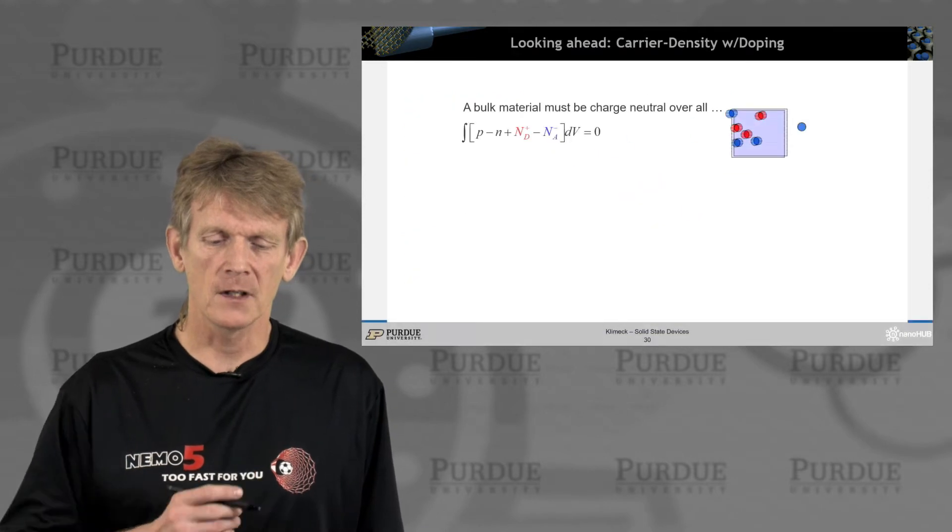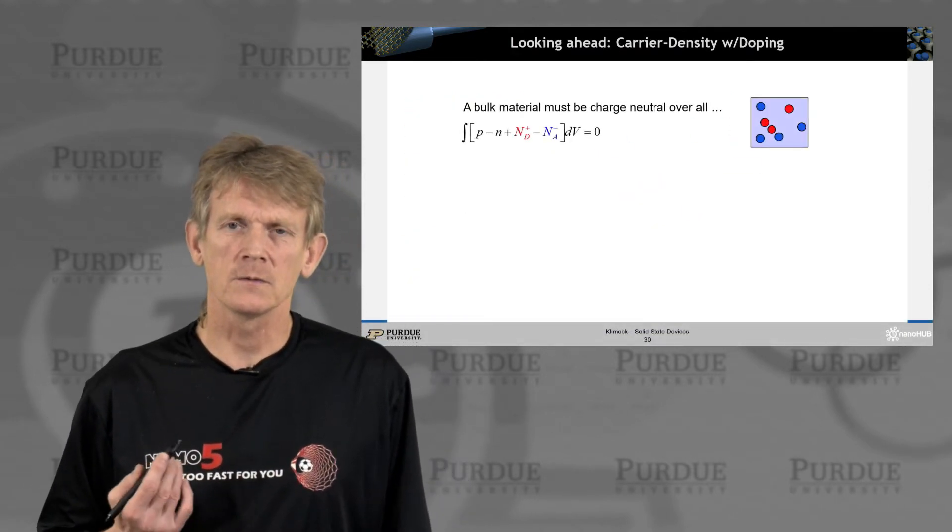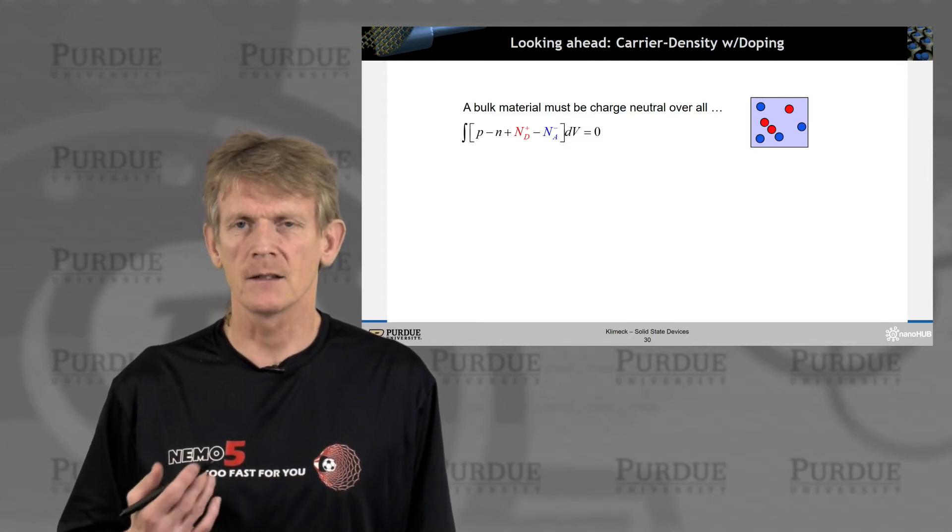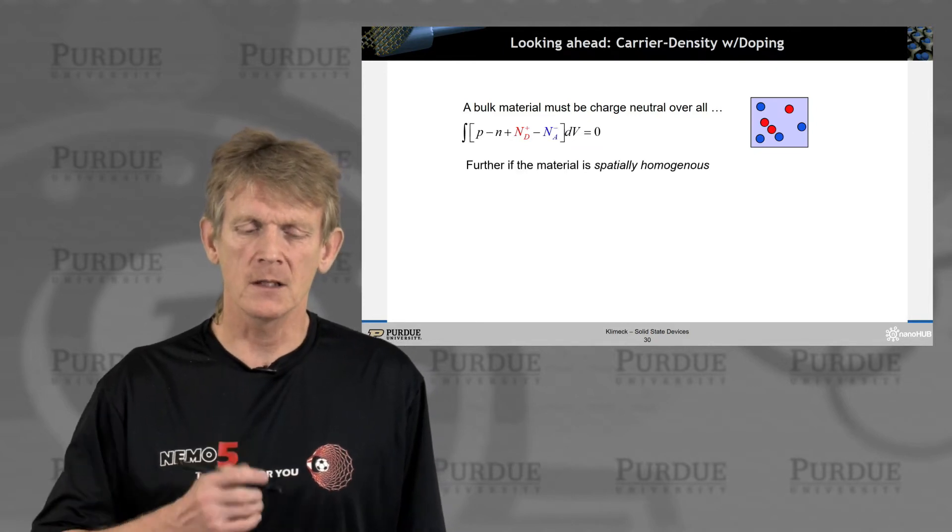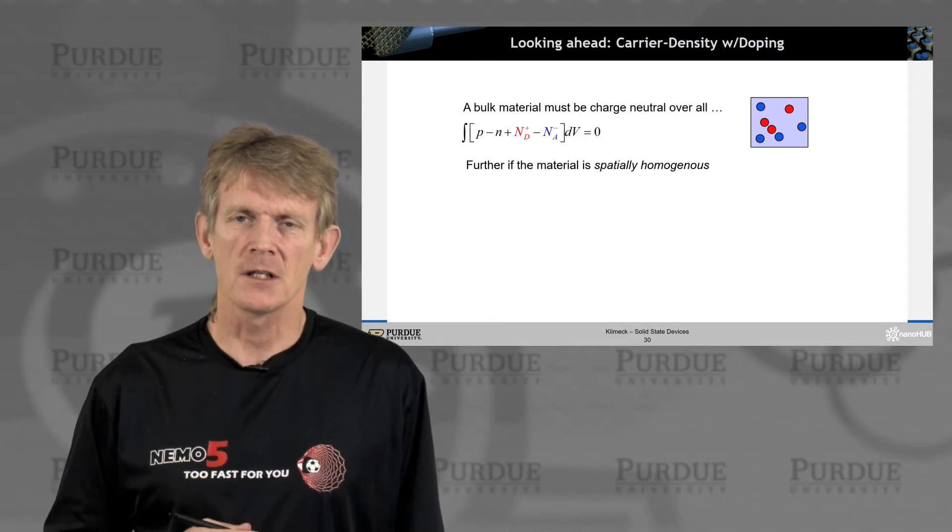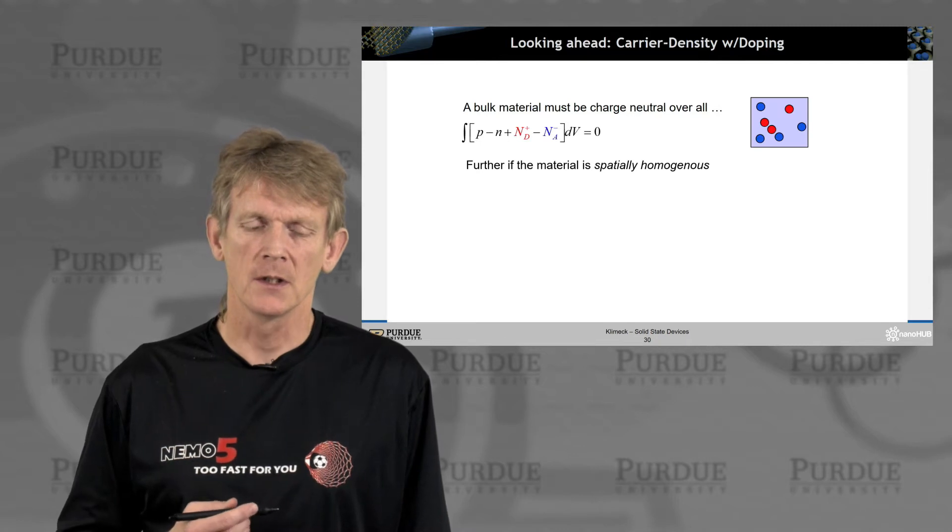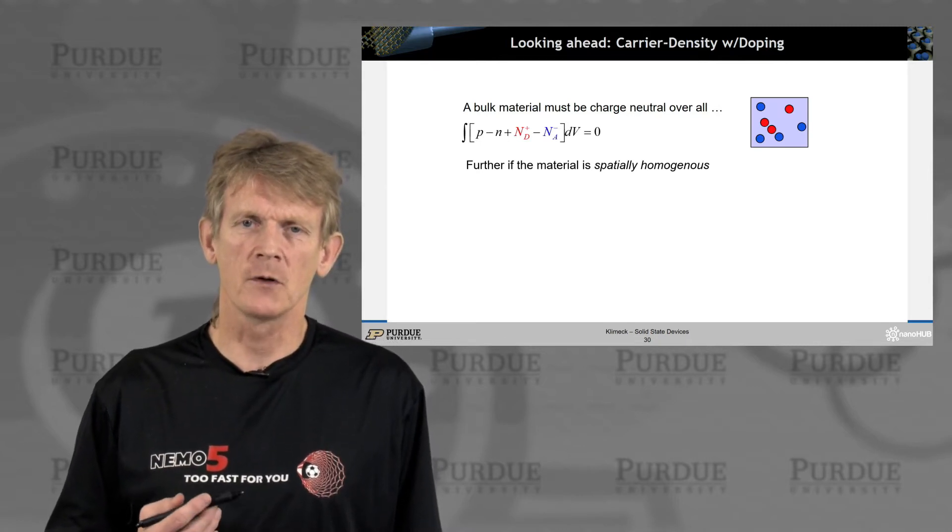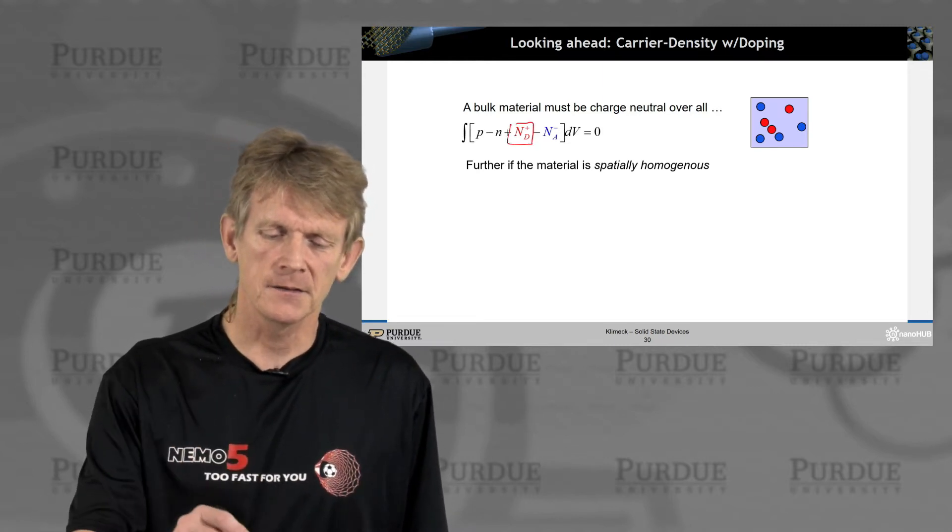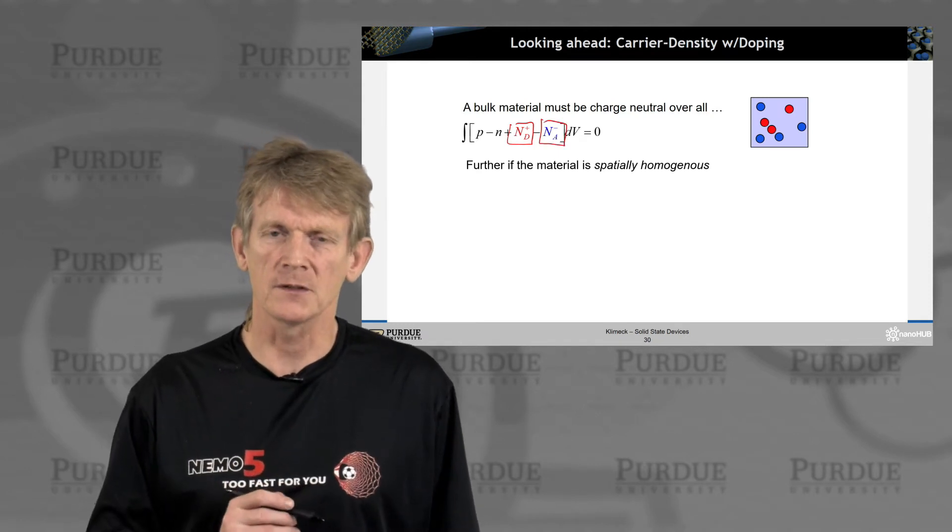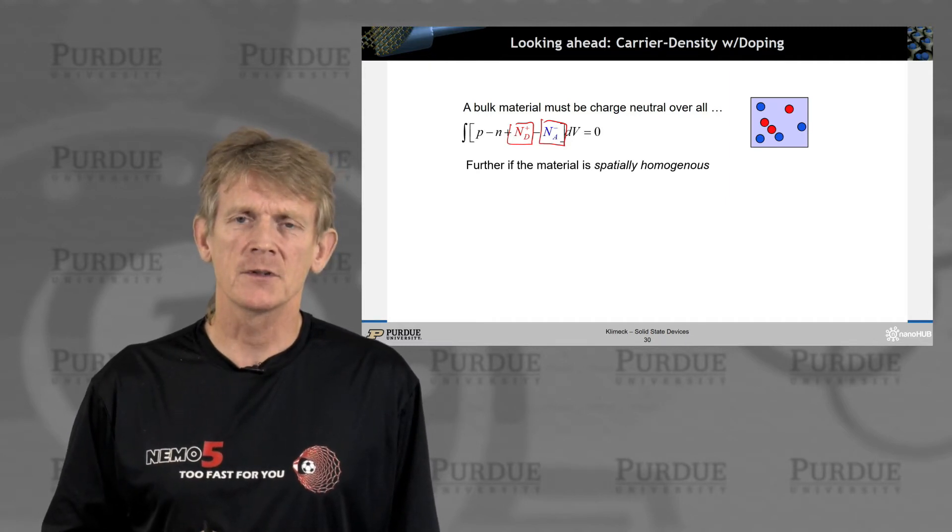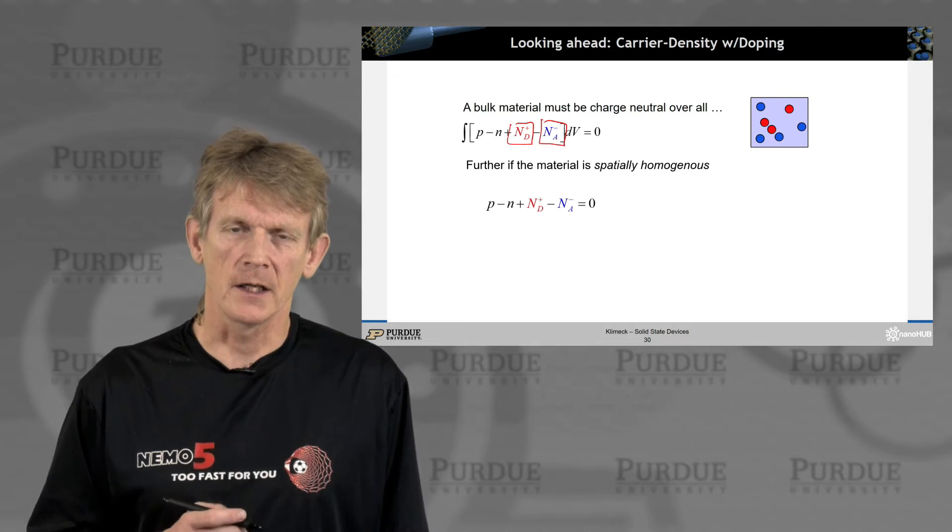So let's dive into that a little bit. I'll show you, looking ahead, what is the formula that we want to derive, and then we'll motivate the work from there. In a bulk material where the charge must be netting out to zero, the sum over the hole charges minus the sum over the electron charges and the sum of the donors that are ionized and the sum of the acceptors that are ionized must be integrated out to zero. That's overall, the overall total volume. If the material is spatially homogeneous, the integrand must be zero.